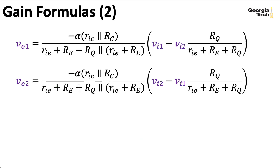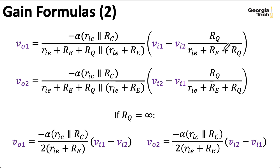Anyway, here's what the gain formulas look like with the current substituted in. Notice that if we let RQ go to infinity, then RIE and RE here get swamped by RQ, and I wind up with RQ over RQ, which gives me one. So this whole thing here winds up simplifying to this.